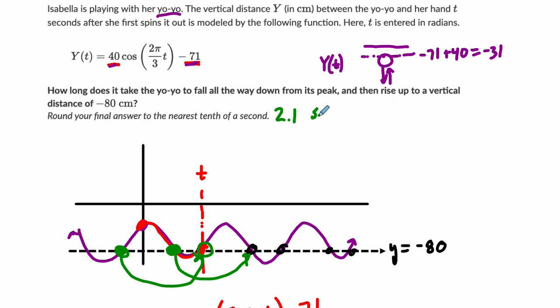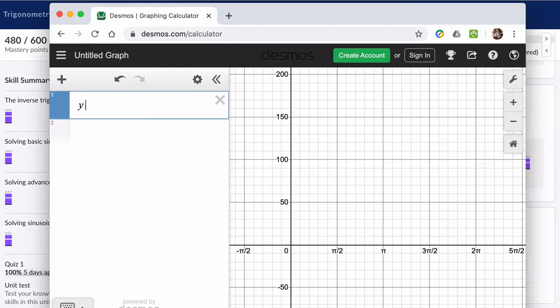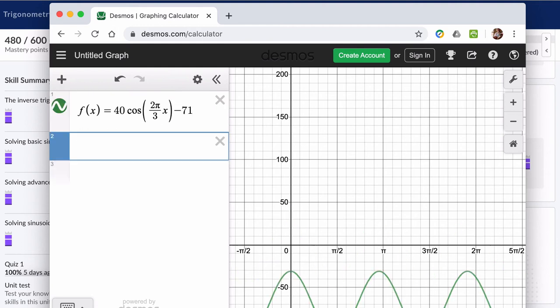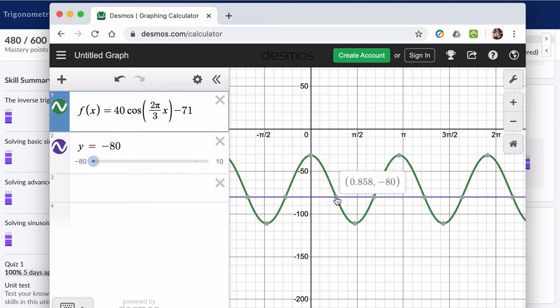But let's look at this on a graph so you can see what it looks like. Let's look at this using Desmos. When you type in f of x equals 40 cosine of 2π divided by 3x close parentheses minus 71, and I'm looking for all the heights where it's negative 80. You can see here that this is the first one, 0.858 plus 0n, but this is the one we just got right there. On a graphing calculator you can plot y equals negative 80 and plot this cosine function and see where they intersect.